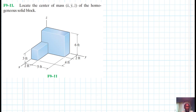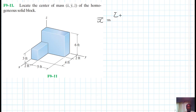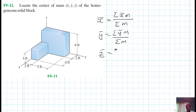Hello, I welcome you all. The problem reads: locate the center of mass of the homogeneous solid block. This problem is from Engineering Mechanics Statics, 13th edition by Hibbeler. What we have been asked to find is X-bar, Y-bar, and Z-bar. Since this is a composite body, X-bar equals the summation of x̃·M divided by summation of M, and similarly for Y and Z. Our mass M equals rho times V, and since this is homogeneous, density rho is constant.